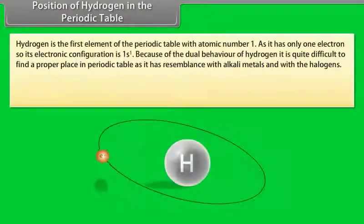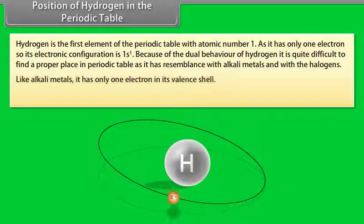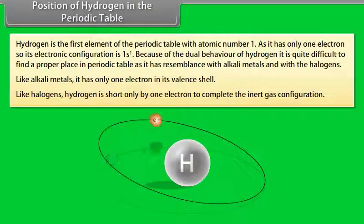Position of hydrogen in the periodic table. Hydrogen is the first element of the periodic table with atomic number 1. As it has only one electron, so its electronic configuration is 1s1. Because of the dual behavior of hydrogen, it is quite difficult to find a proper place in periodic table, as it has resemblance with alkali metals and with the halogens. Like alkali metals, it has only one electron in its valence shell. Like halogens, hydrogen is short only by one electron to complete the inert gas configuration.